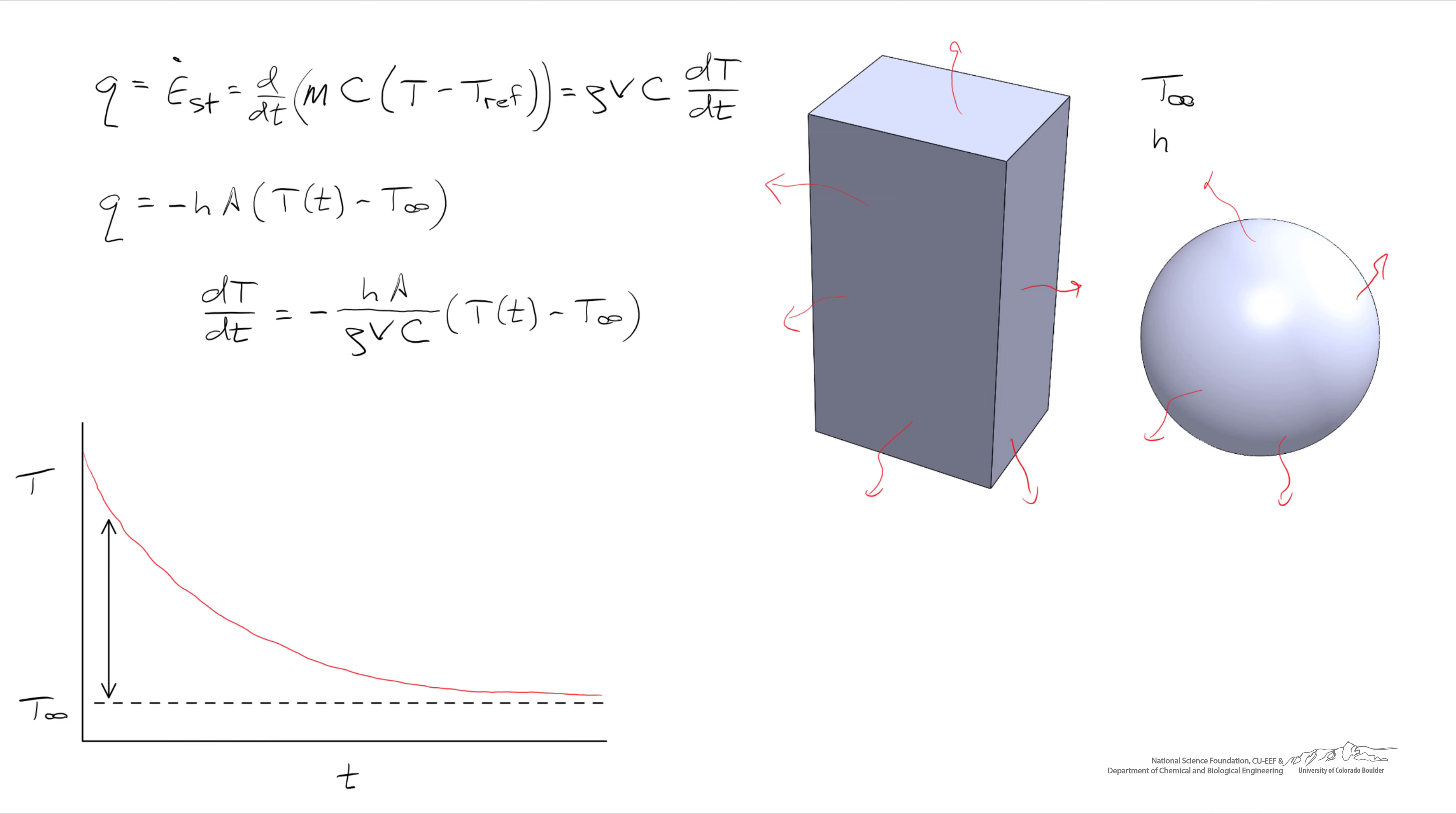Note that at initial times, the difference in temperature of the object minus T infinity, some positive quantity, we find that the slope of our temperature profile is negative. And as time progresses, the temperature difference decreases over time, as does the slope.